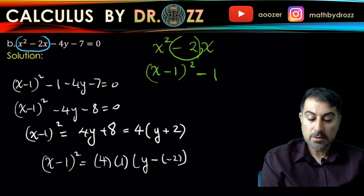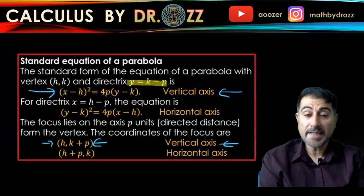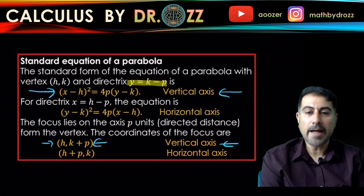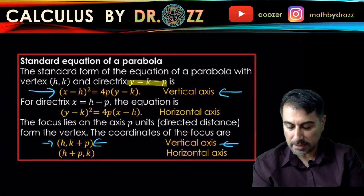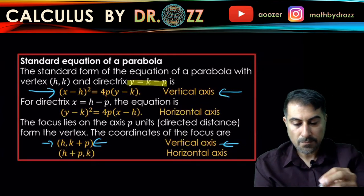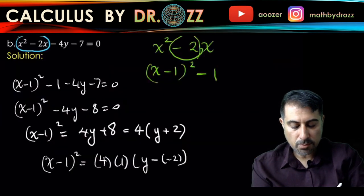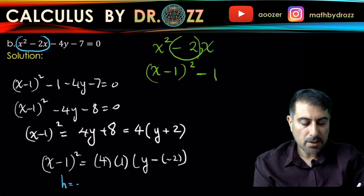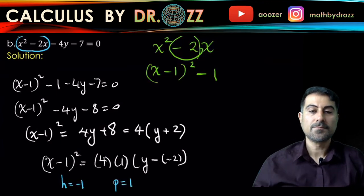This is the exact same form we had earlier: x minus h quantity squared equals 4p times y minus k. Now I can grab h, p, and k respectively out of this equation. h equals 1, p equals 1, and k equals negative 2.